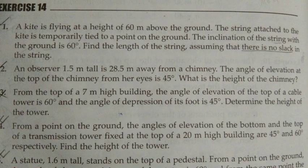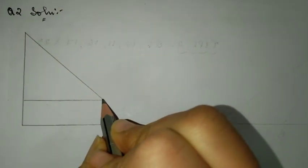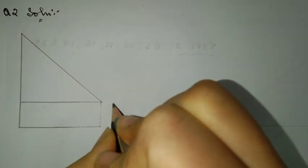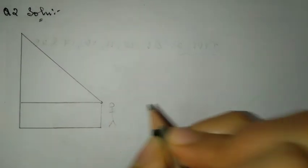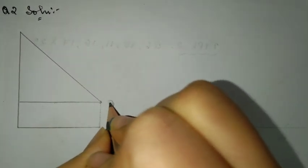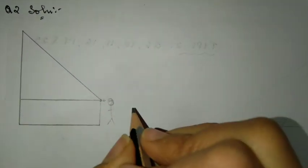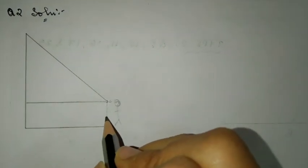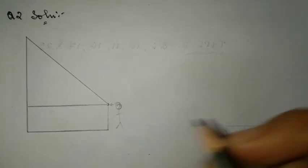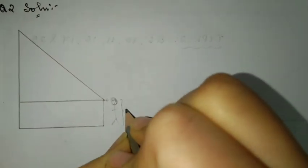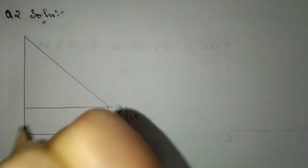The person's height is 1.5 meters and that person is 28.5 meters away from a chimney. The angle of elevation at the top of the chimney from her eyes is 45 degrees. What is the height of the chimney? First of all, this will be the triangle. If they've given you the height of the person, then you have to make a rectangular box underneath the triangle.